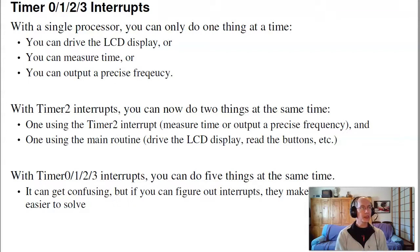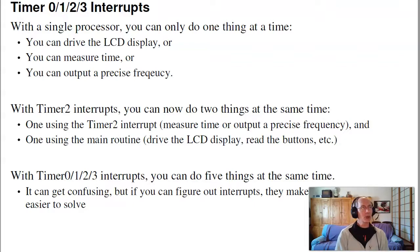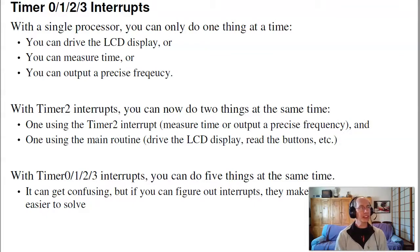Once we introduced timer 2 interrupts, you're suddenly able to do two things at once. You can output a precise time using timer 2, or you can output a precise frequency using timer 2. With timer 0, 1, 2, and 3 interrupts, you can actually do five things at the same time.